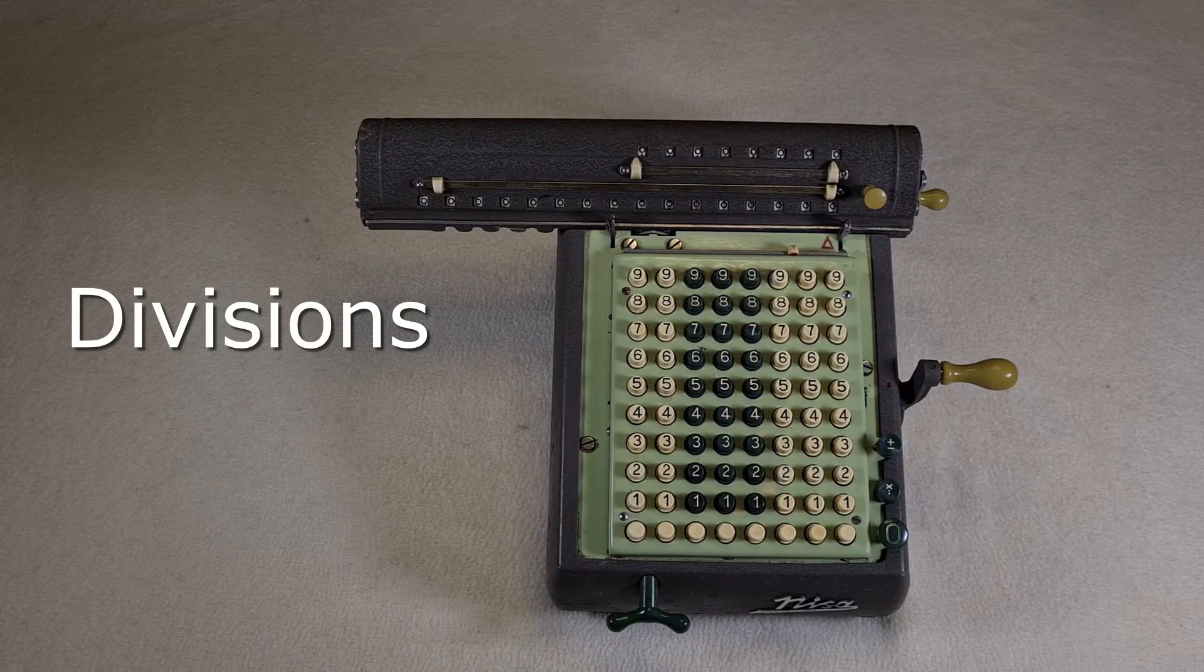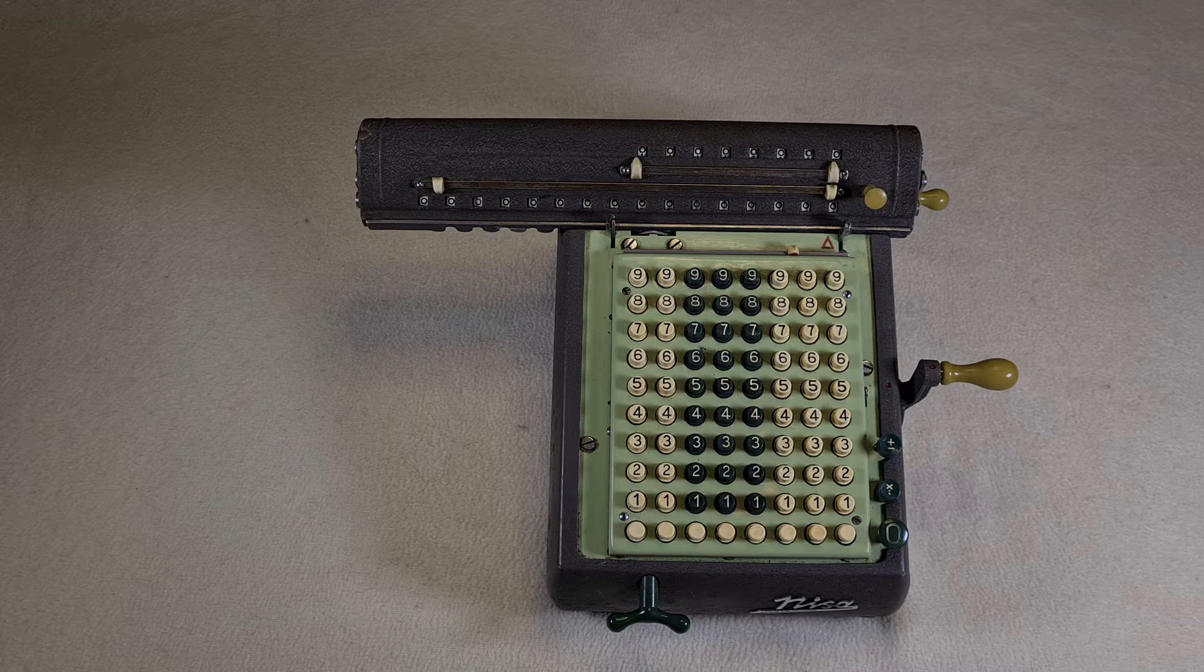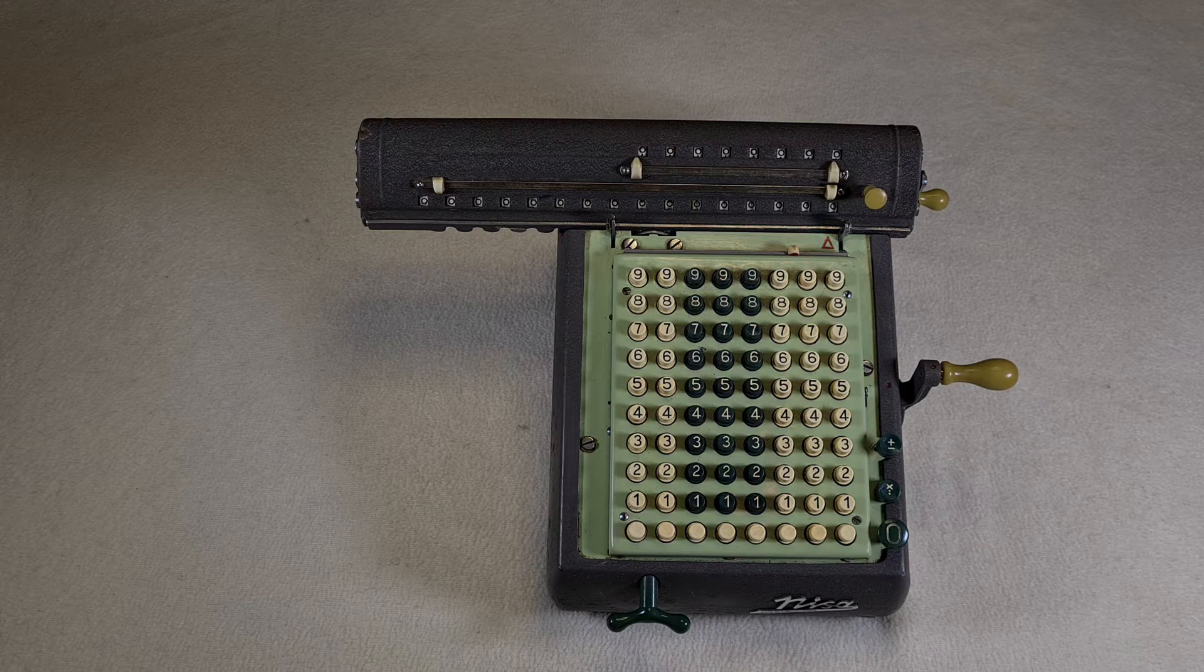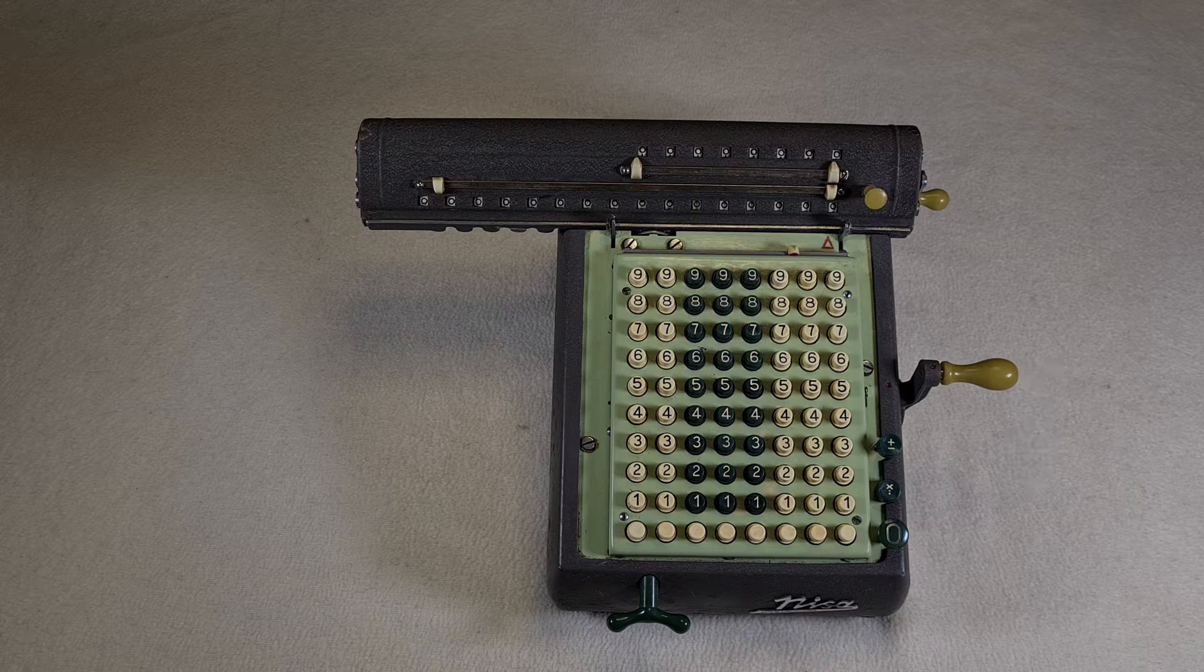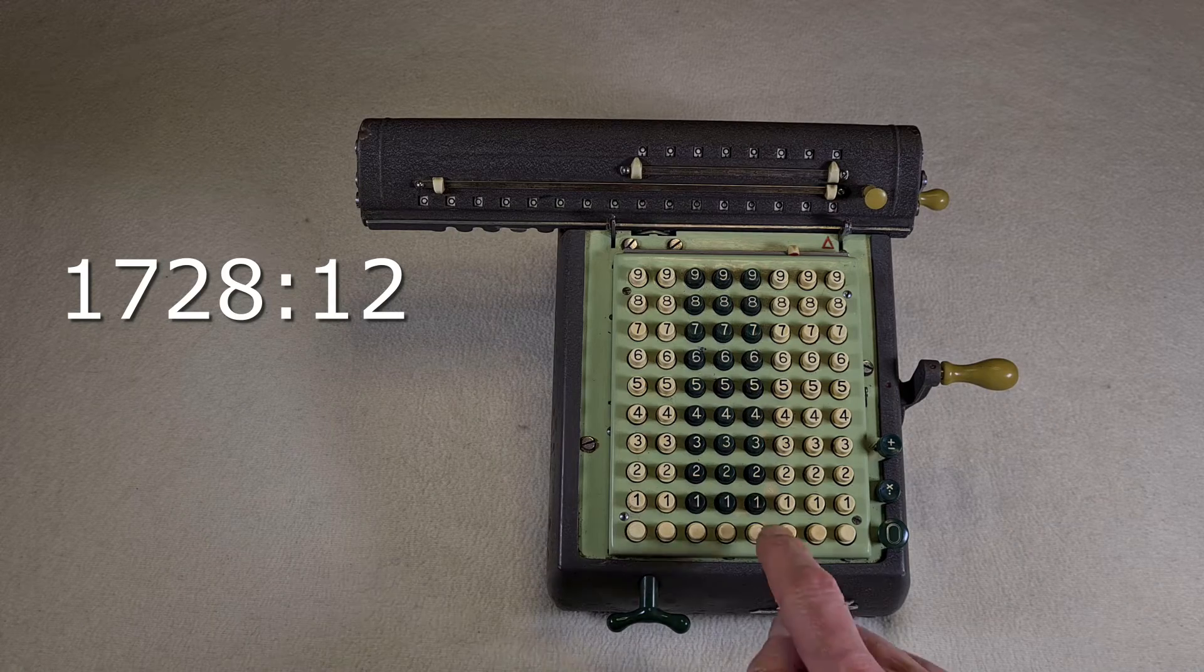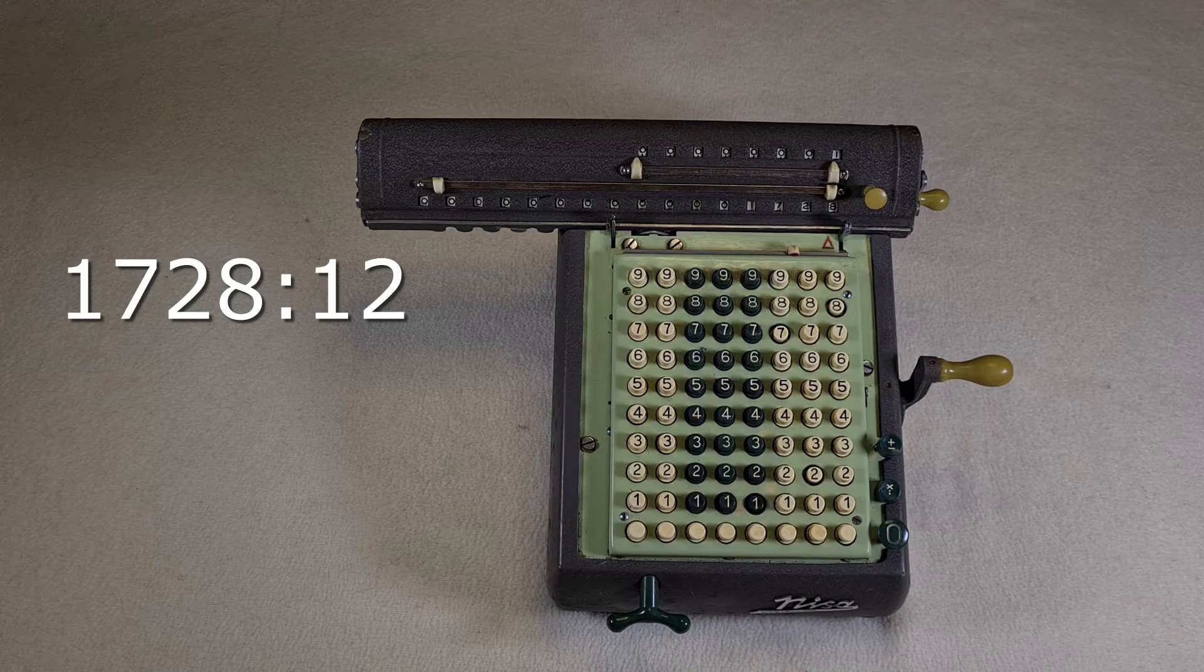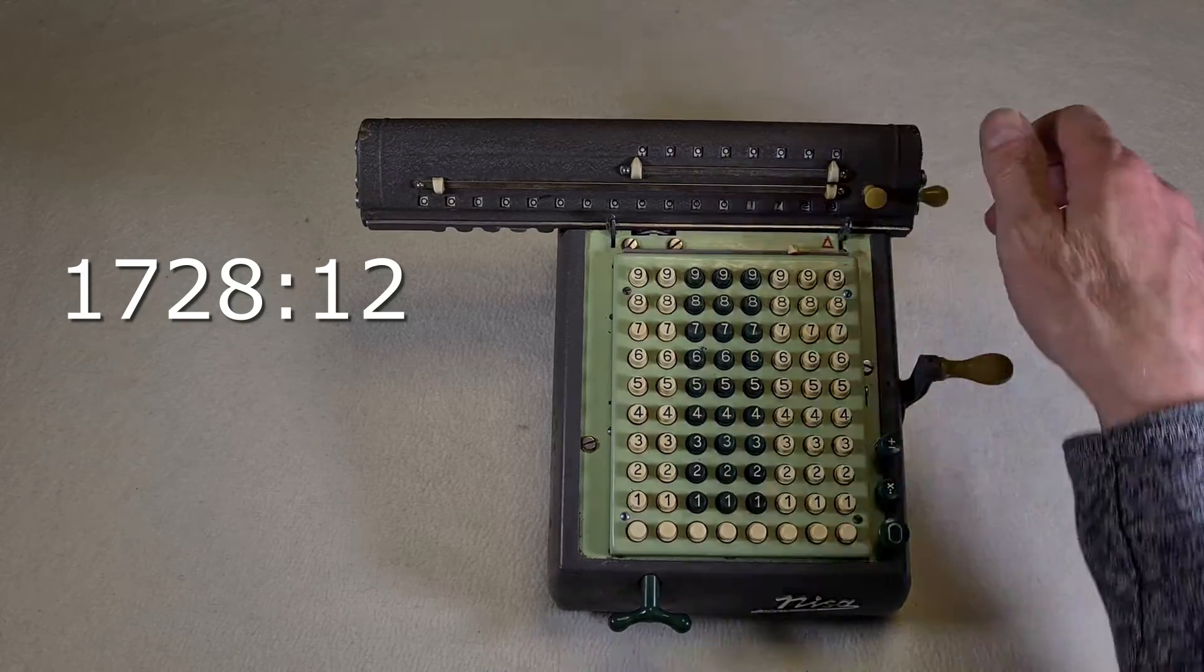Divisions. It's as easy as multiplications. As multiplication is a process of repeated additions accomplished by forward turns of the operation crank, division is a process of repeated subtractions accomplished by backward turns of the operation crank. Let's say you want to do 1728 divided by 12. You set the dividend 1728 in the keyboard and turn the crank once clockwise. Then I press the clear button and I turn the counter reset crank.